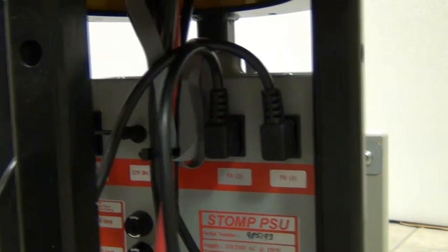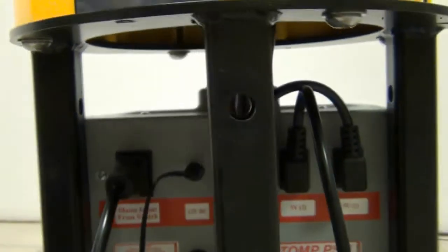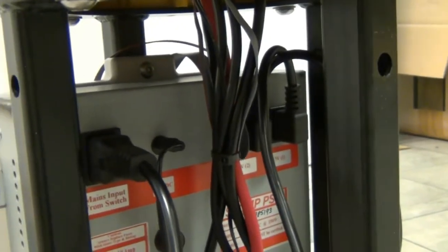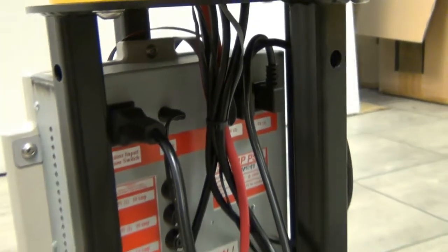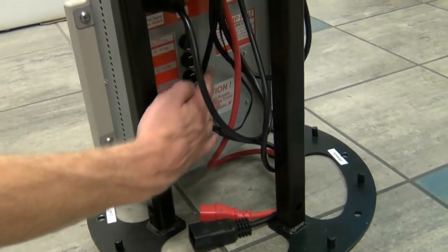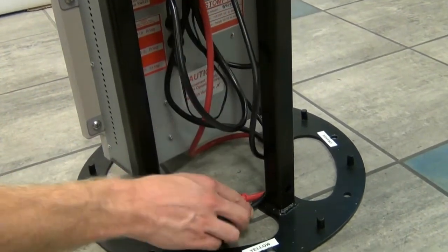There is a row of power connections at the top of the power supply box. Make sure all the connections are secure. There will be a black 3 pin power socket loose at the bottom of the stomp. This is where you will connect the power to your stomp from the power source.